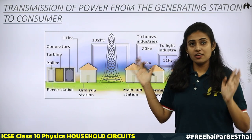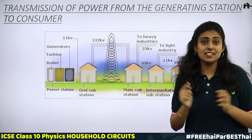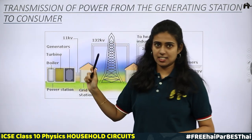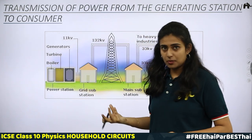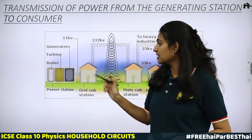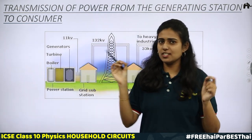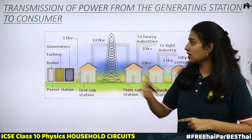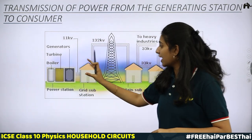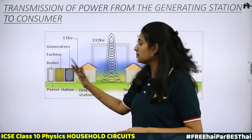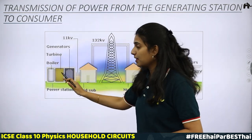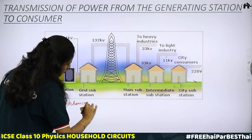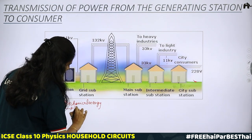Transmission of power from generating station to consumer. We all consume electricity — have you ever imagined where this electricity actually comes from? This electricity comes from a power station. In the power station, you can find a boiler, turbine, and generator. In the boiler, water boils and vapors are produced. These vapors help the turbine to rotate, and the coils rotate. Here we have a generator — a device which converts mechanical energy to electrical energy.